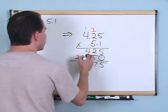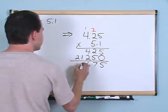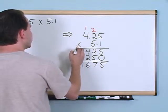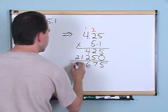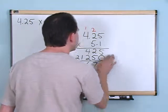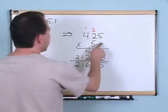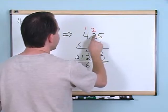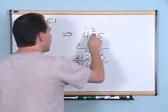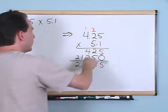I've done the multiplication exactly as if there are no decimals. Now I add up the partial products: 5 plus 0 gives 5. 2 plus 5 gives 7. 4 plus 2 gives 6. 1 plus 0 gives 1. 2 plus 0 gives 2. So the result is 21675. I have not done anything with the decimals yet.